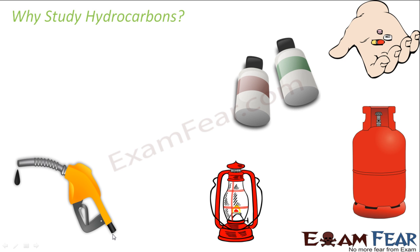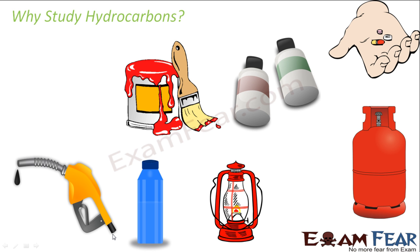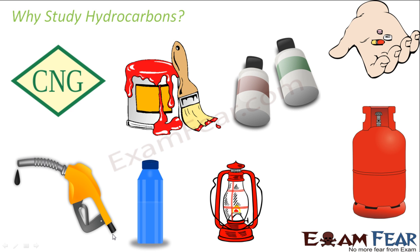The kerosene lamp — the kerosene fuel is hydrocarbon. The bottles, most of the plastic items we see around, the toys, the bottles, the plastic bags — everything is hydrocarbon. The paints that we use to paint our house are also hydrocarbon. CNG gas, which is used to run auto rickshaws, is also hydrocarbon.